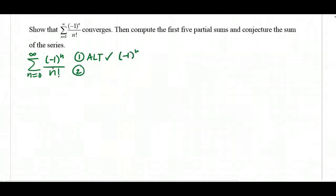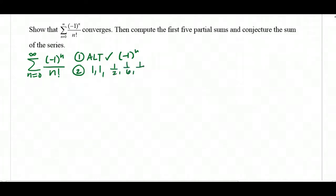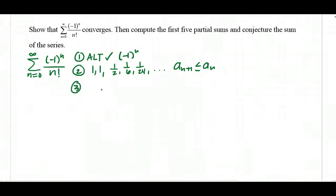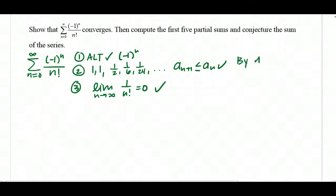Second, the individual terms 1 over n factorial are getting smaller at some point. When I plug in 0, I get 1 over 0 factorial, which is 1. When I plug in 1, I get 1 again. But then I start getting 1 half, 1 over 6, 1 over 24, and so on. So a sub n+1 is less than or equal to a sub n. And finally, the limit of the general term as n approaches infinity converges to 0. So all three parts are true. By the alternating series test, this series converges.